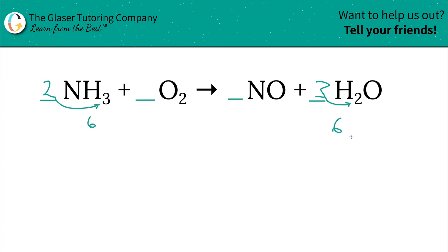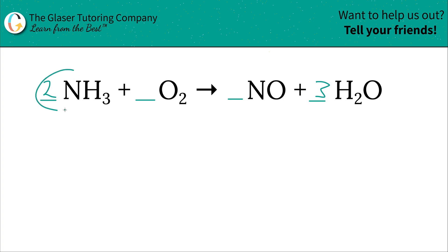Now you might say — wait, I screwed up the nitrogen. Yes, but no big deal, just go back and balance it. How many nitrogens on the left? One nitrogen per ammonia, times two ammonias, equals two nitrogens. On the right you still have one, so put a 2 in front of NO. Two times one equals two nitrogens — balanced.